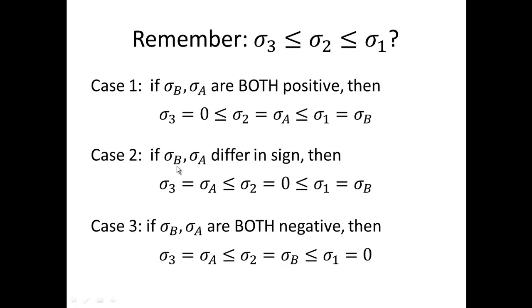Case 2, if sigma b and sigma a differ in sign, that puts sigma 2 as the zero, puts sigma 3 as the negative, what would be the negative value of sigma a, and that puts sigma 1 as sigma b, the greater of the 3. And that's case 2.